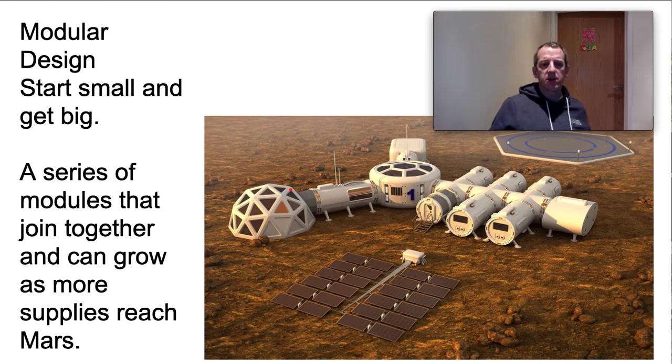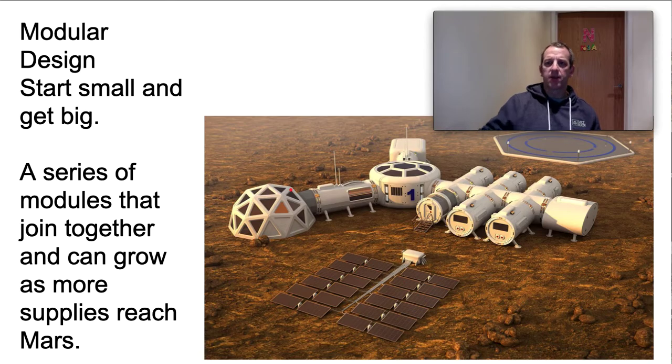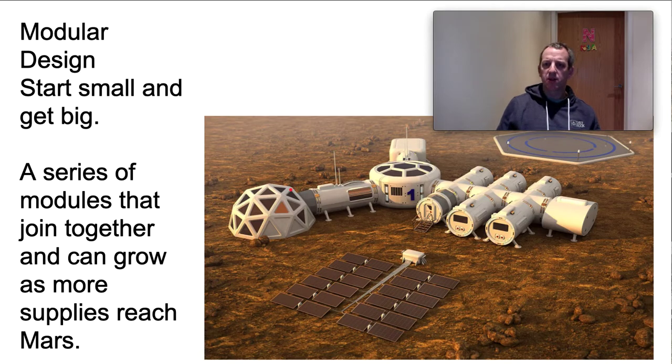At some point, Mars only works as a habitable planet if we can start growing food there. It doesn't work if we have to rely on really expensive spaceships just flying there all the time. So you're going to have to have some sort of biodome.